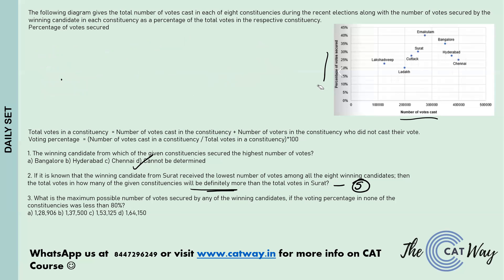Question three asks: what is the maximum possible number of votes secured by any winning candidate if the voting percentage in none of the constituencies was less than 80%? We have to maximize the number of votes secured by the winning candidate, which means maximizing the total number of votes. If maximum voters are there, then that percentage of votes will definitely be greater.